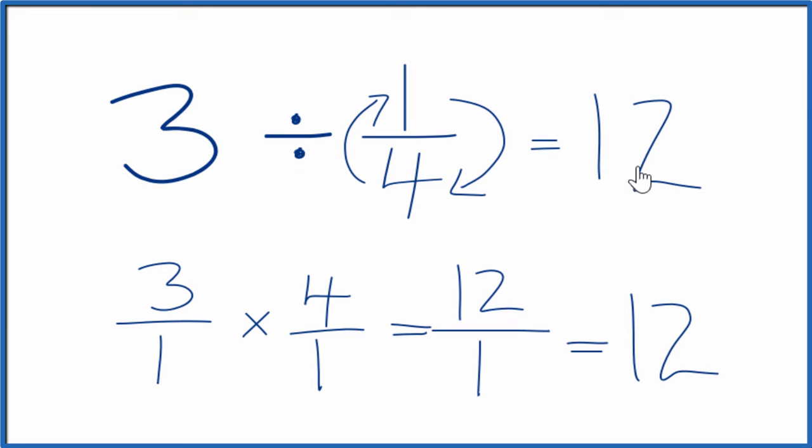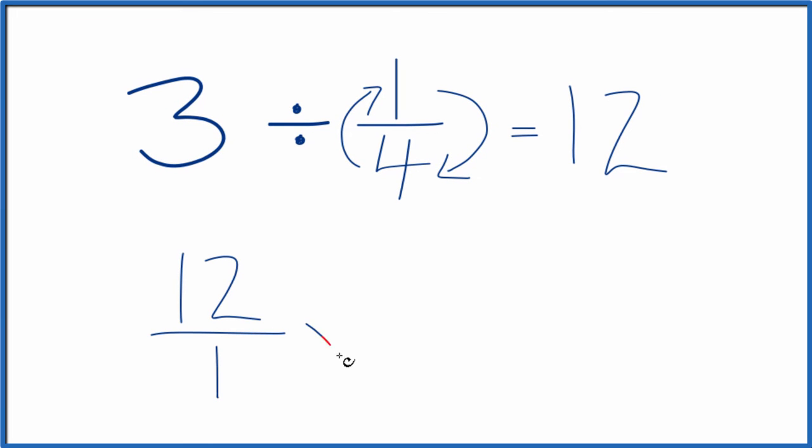And we can check our work because 12 times one-fourth, that should equal three. Let's try that. So we say 12. And again, let's call it 12 over one multiplied by one-fourth. And we think that should equal three.